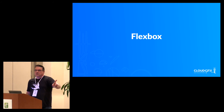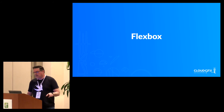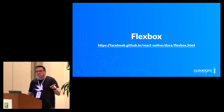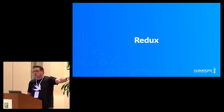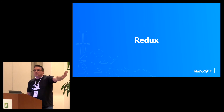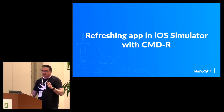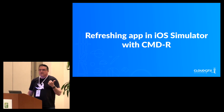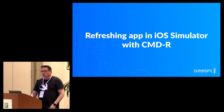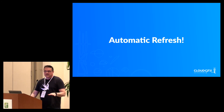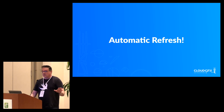Flexbox is another awesome thing — check out the React Native documentation for great examples. There's also Redux, which I think is awesome but mind-bendingly complex with a steep learning curve on top of what React Native already has. And you can refresh your simulator using Command+R, or hit R twice for Android — it refreshes your app immediately with no rebuilding necessary. You can also enable auto-refresh when you make a code change, which blew me away.